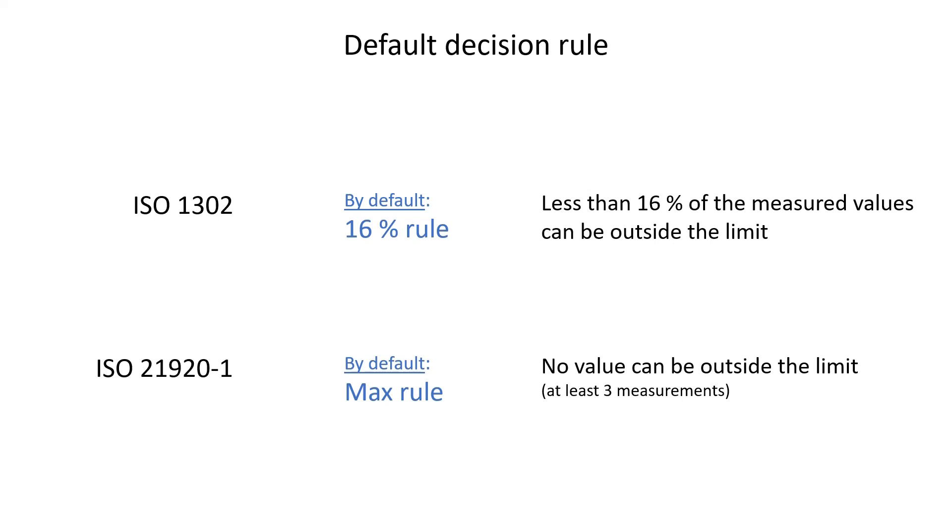The next important difference concerns the default decision rule. In ISO 1302, the default rule was the 16% rule. In the new standard, the default rule is now the max rule. It simplifies the interpretation of the limit and removes a rule that was never understood or applied correctly.